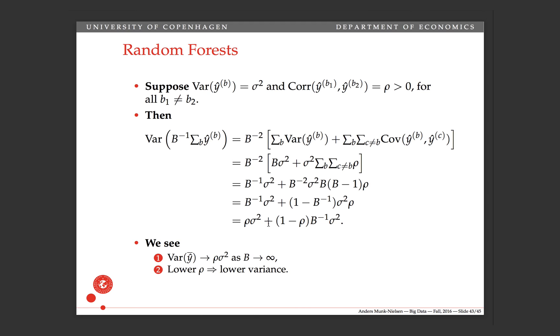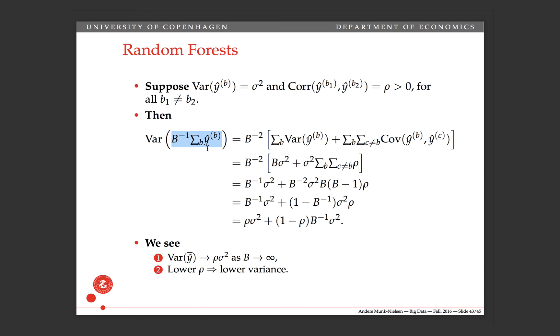But what we can see is that when we increase b, then lower rhos will imply lower variances. So if we can get rho down, the correlation between two trees, if we can get that down, then we can get a lower variance on our predictor. This thing here, that's our predictor.